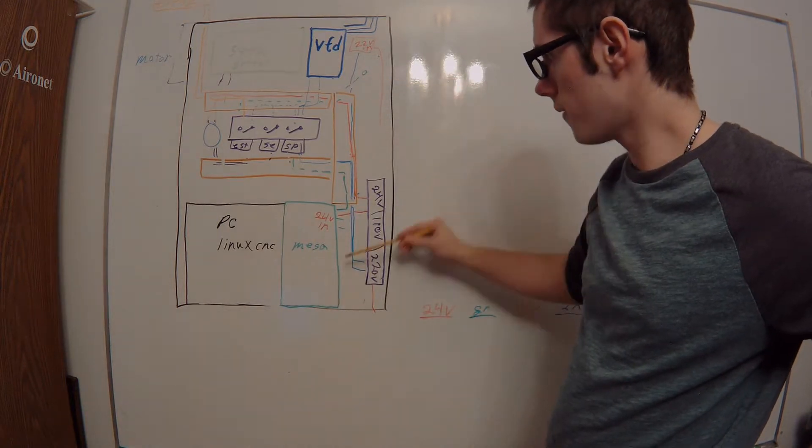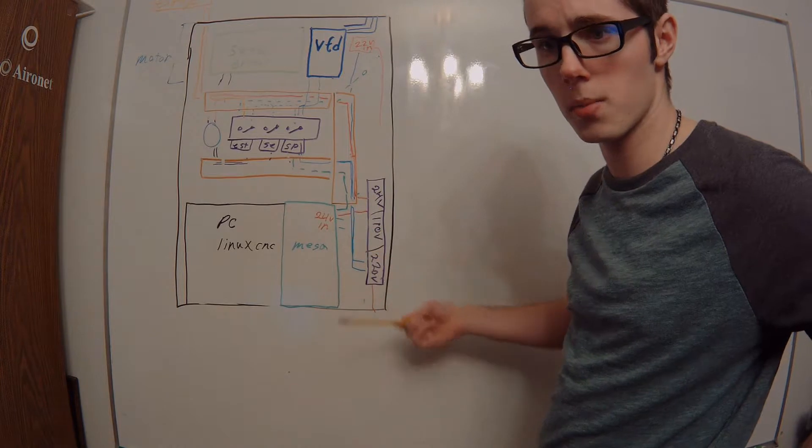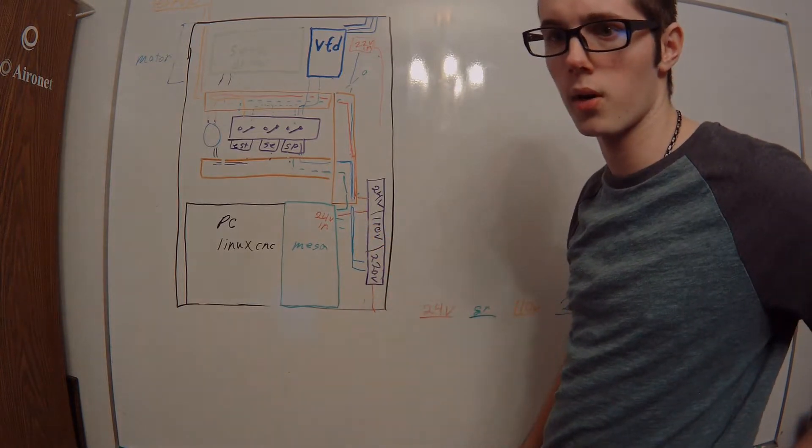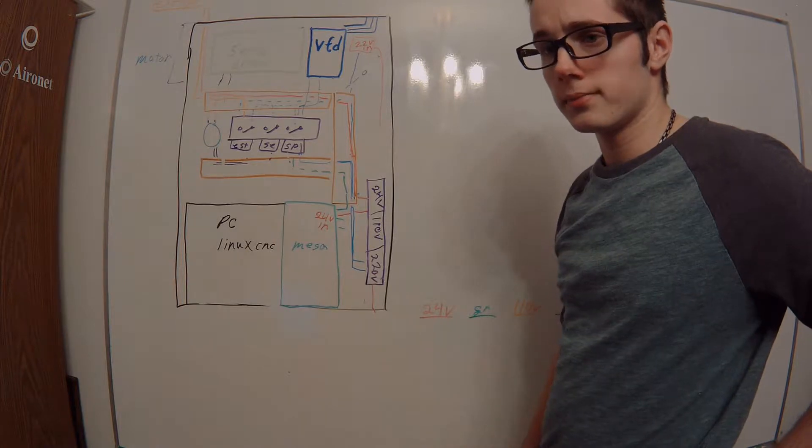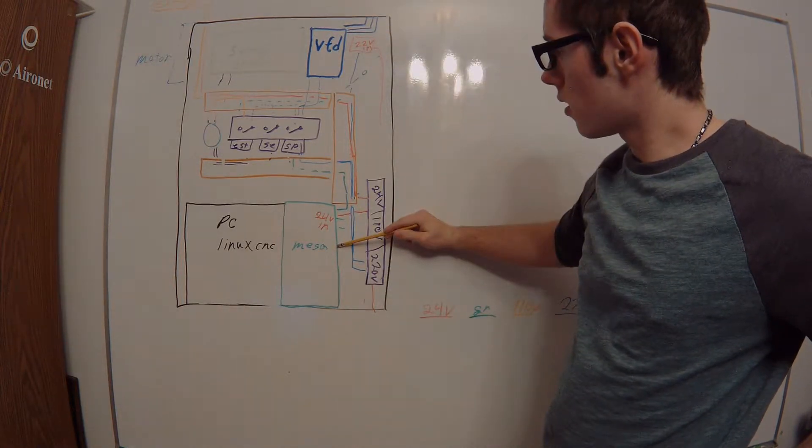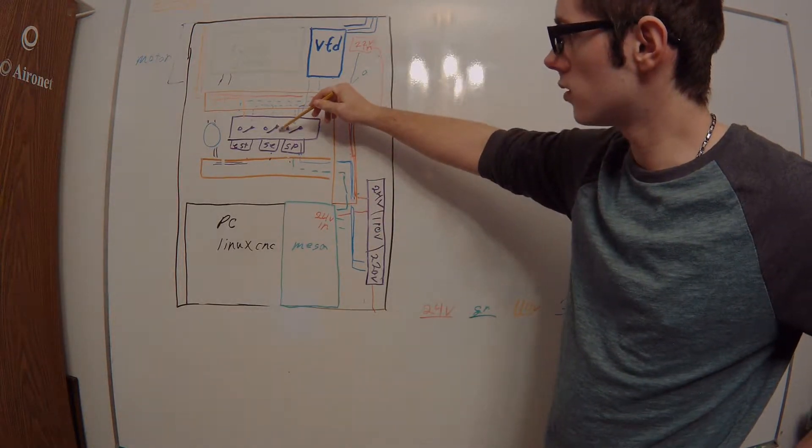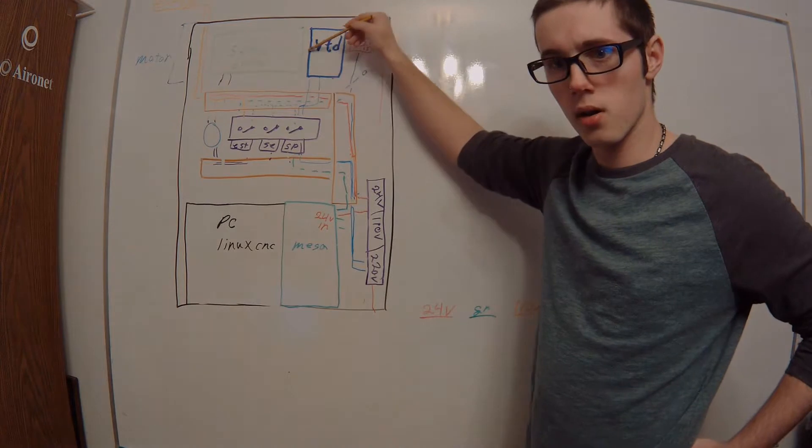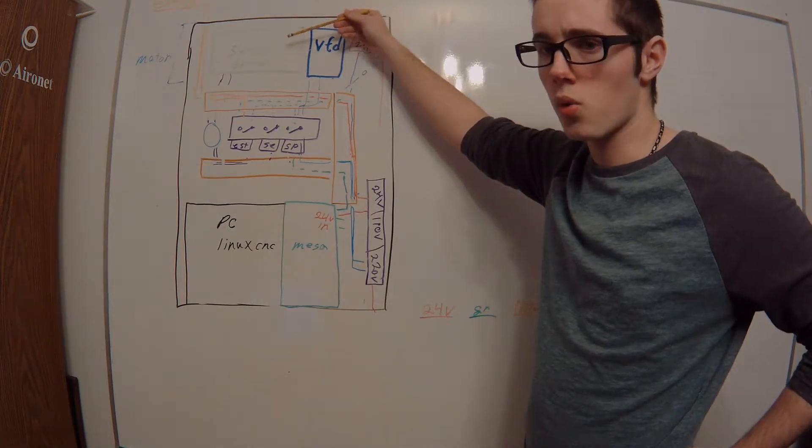So on mine, I've got a Mesa 7i77, which is the one that does the servo motors. Since I have servo motors, I'm going to go ahead and use them on the original machine. So I've got the Mesa card, and I've got a relay set up for the servos, and the servo drivers are up here. That's all four of them. They can hardly see it in this. I know I used the wrong color.